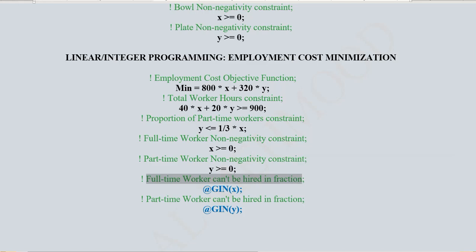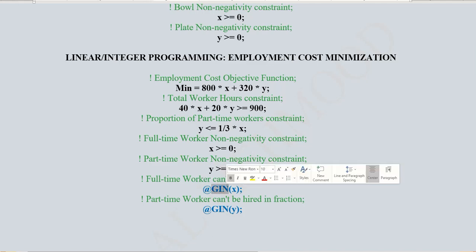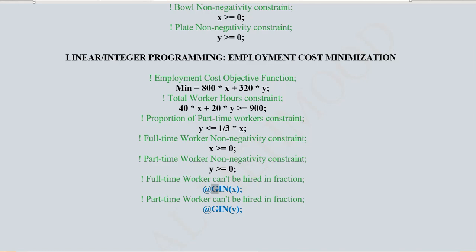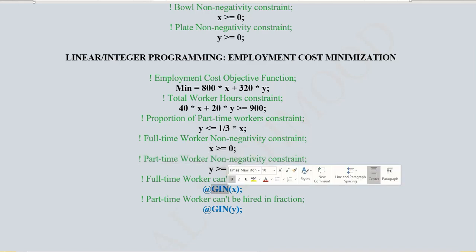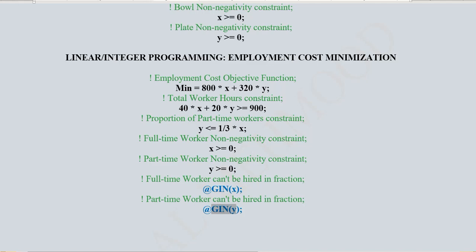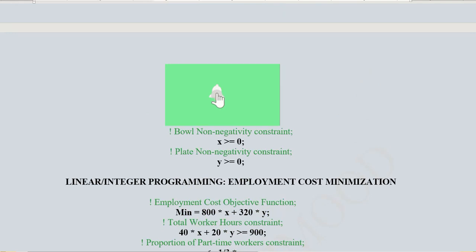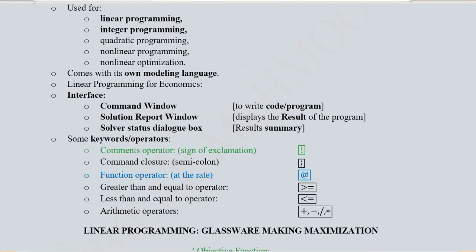The key addition that makes this integer programming is the GIN function. We write the at-sign to call a function, and the keyword GIN stands for general integer — an integer that can adopt any value from 0 upward. If we wrote BIN it would be a binary integer (0 or 1 only). Since full-time and part-time workers cannot be hired in fractions, we write @GIN(X) and @GIN(Y) so both variables must be whole numbers.